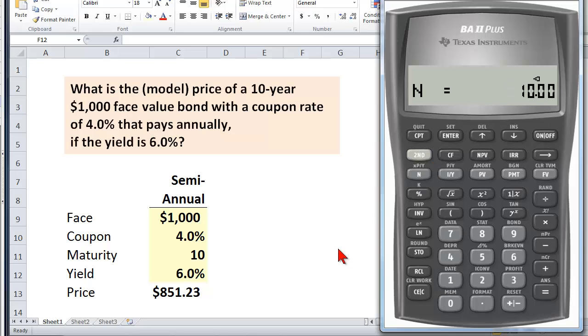I can go back and say N is 10. The interest rate, or the yield, is six percent. The payment or coupon is $40 per period or per year in this case, and that face value or future value is still the same, $1,000. I've given it the same four variables, but this time I'm dealing with annual discounting of the cash flows. I compute the present value, and I do get a slightly different price, and that's appropriate. The price will vary based on our compound frequency. This is why it's important to establish what the compound frequency is.